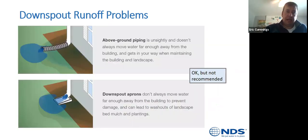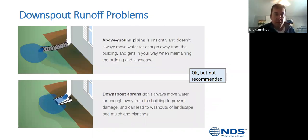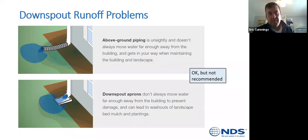For downspout runoff problems, there's nothing like seeing a two-million-dollar home with a four-foot piece of corrugated pipe coming out of the downspout to run it four feet off the foundation, or those little aprons that move it even less far away from the actual home — which can lead to the same problems as having nothing there at all.